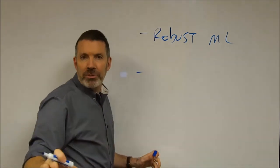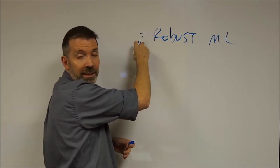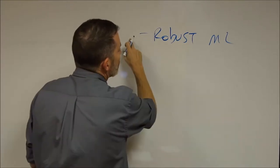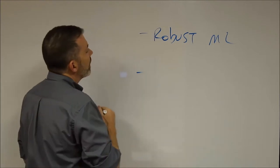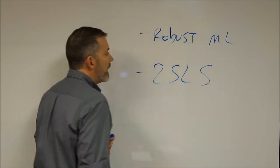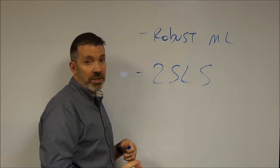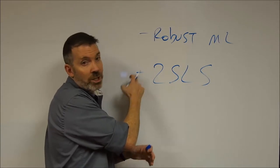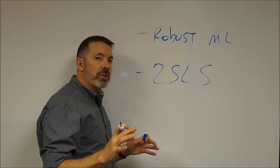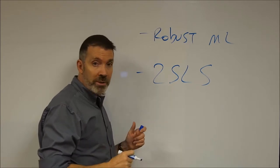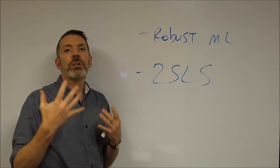The other approach is to give up maximum likelihood entirely and choose an estimator that doesn't make the normality assumption. One that's becoming increasingly used is called two-stage least squares. Ken Bollen has made important contributions to its development and application. The way it's calculated, it is asymptotically distribution-free — it doesn't even make assumptions about the shape or form of the distribution.